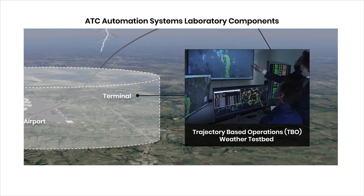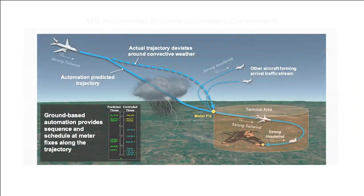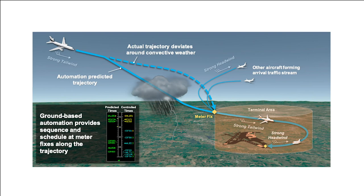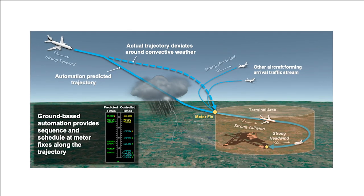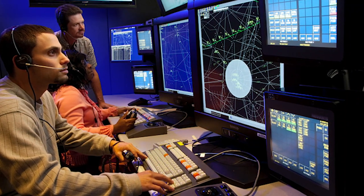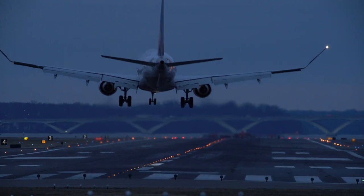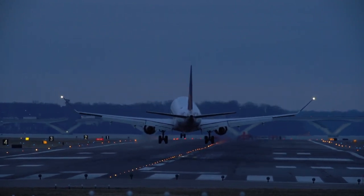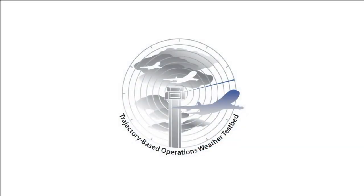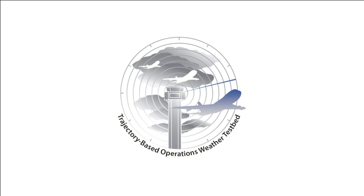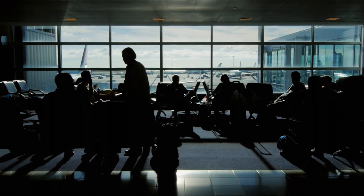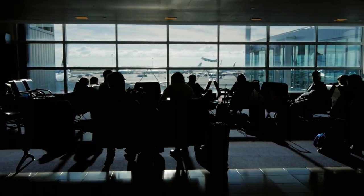Lincoln is currently using our automation lab to play a leading role in the advancement of trajectory-based operations, or TBO. TBO is the concept to improve efficiency in the national airspace system. The current TBO automation systems in use by the FAA do not use adequate wind or weather forecasts, which really limits their potential in challenging weather conditions when the tools can be most helpful. Our newly developed TBO weather test bed will allow the lab to study the impact of strong winds and convective weather conditions, which can generate significant flight delays throughout the U.S.